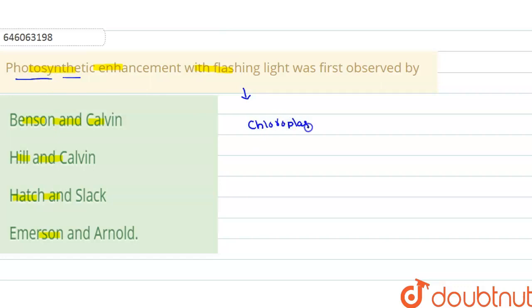When these chloroplasts are exposed to light, which type of light? That light is red light and far red light.